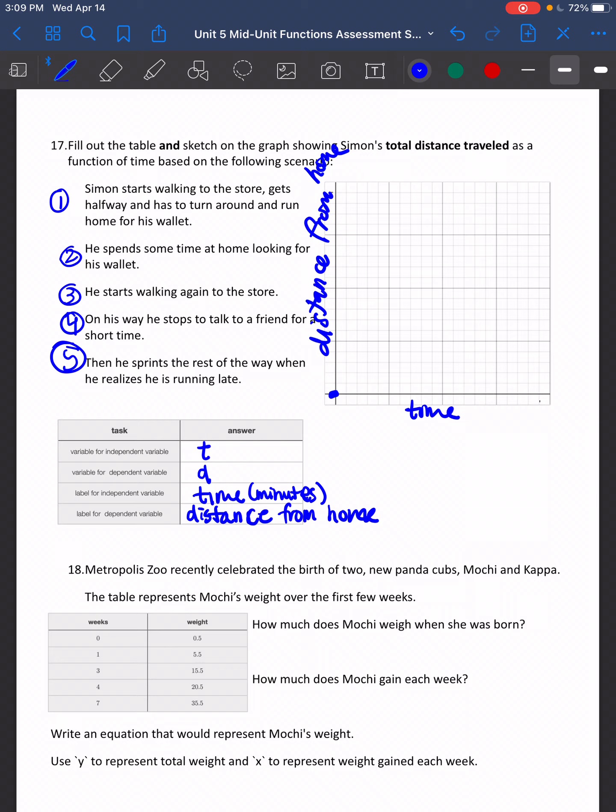So let's look right here. Simon starts walking to the store, gets halfway, and has to turn around and run home for his wallet. So he's walking to the store. He starts out at home. This is my distance from home. This is my time. And we just sketch. We need to think, okay, he's walking slow, so my line's not going to be that steep. He gets halfway and has to turn around and run home for his wallet. So his distance from home is going to start decreasing. But he's running home, so he's going to move a little quicker. He spends some time at home looking for his wallet. So his distance from home doesn't change. He starts walking to the store again.